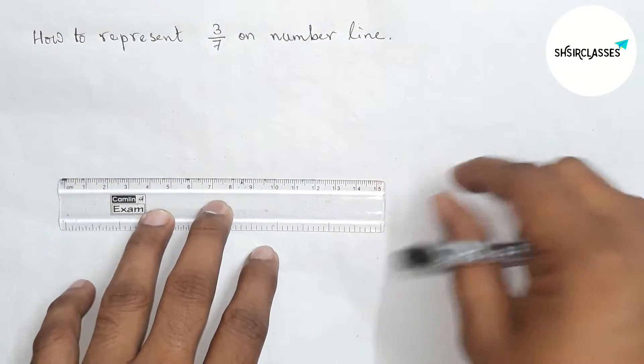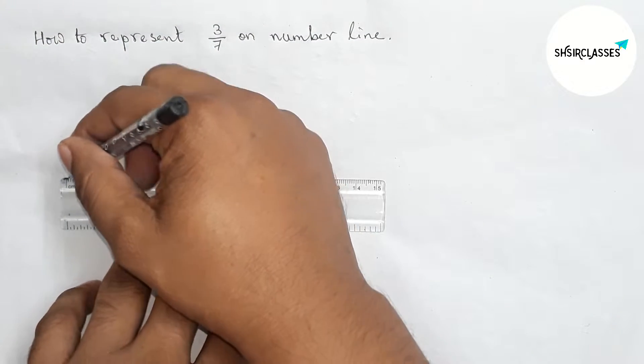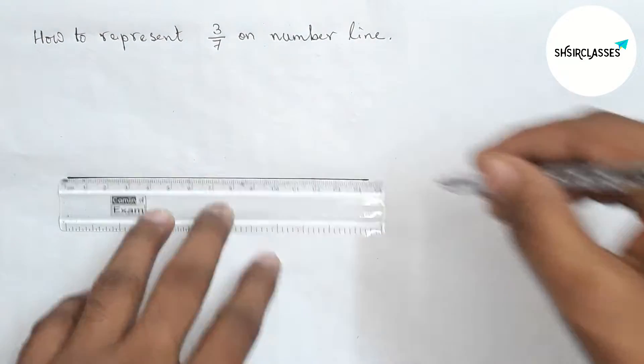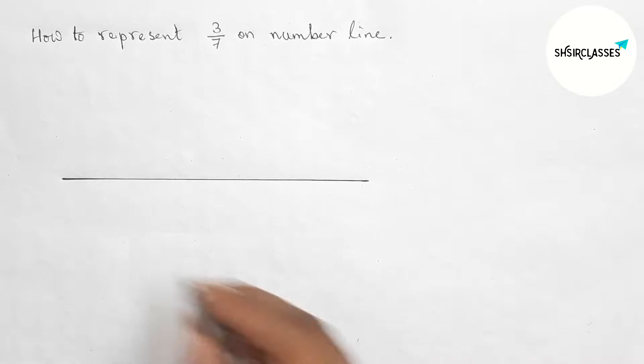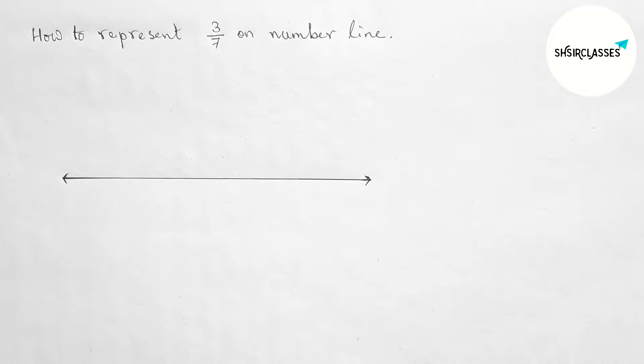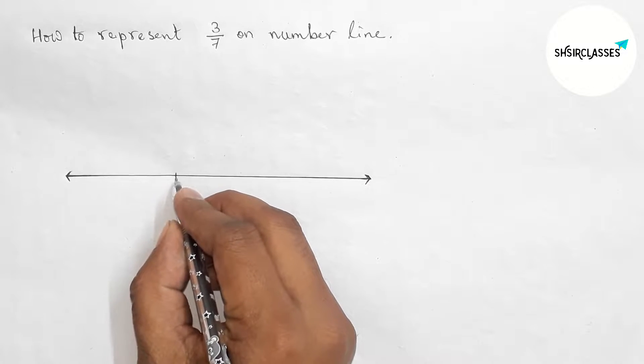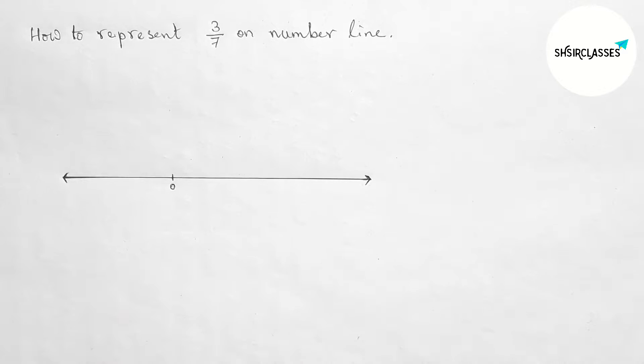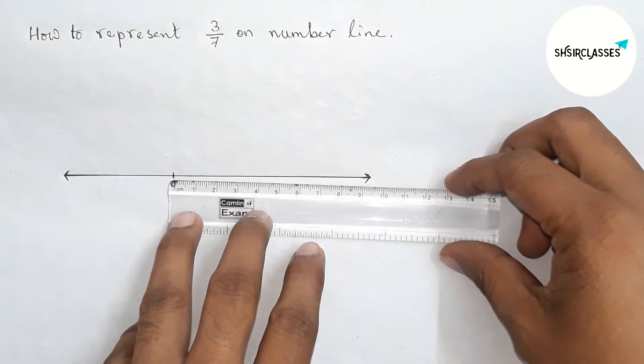Let us make the number line. First, draw a line of any length and place arrow marks on both sides. Next, mark the starting number zero. Now I am going to use a scale to mark the numbers on the line.